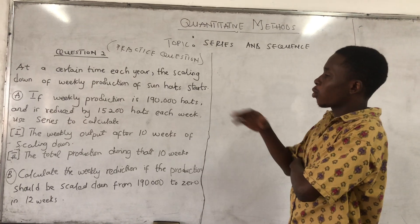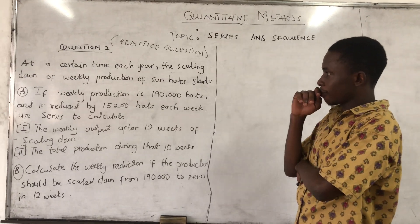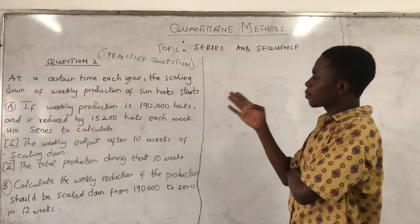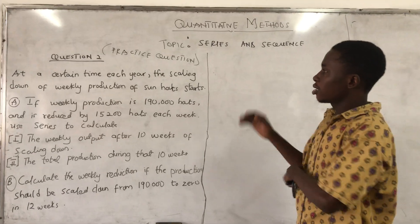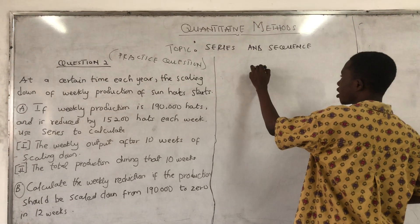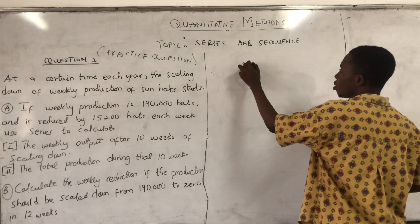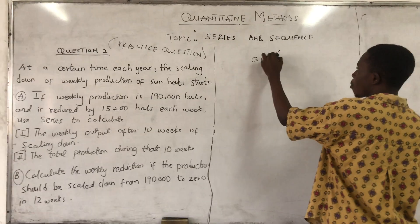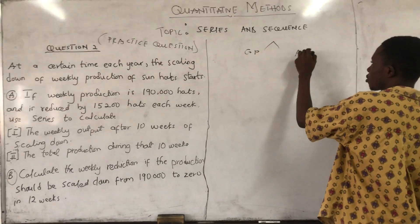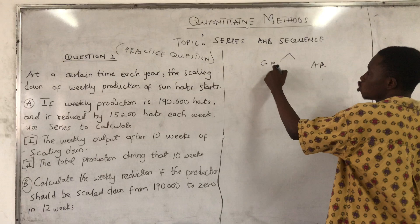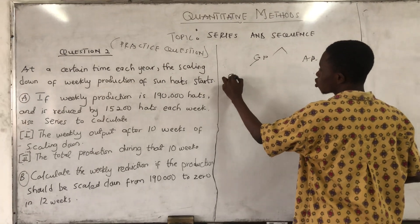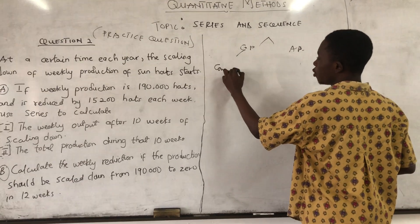Now I was given a question like this. How would I be able to know that with this particular question I am going to use geometry — geometric progression? Geometric progression: there is a common ratio.